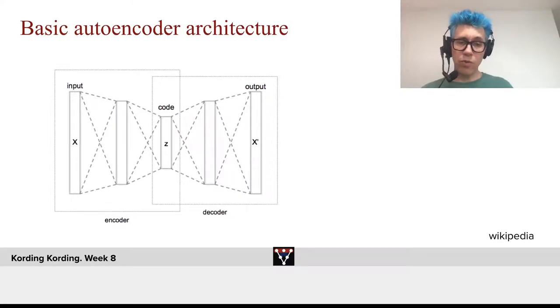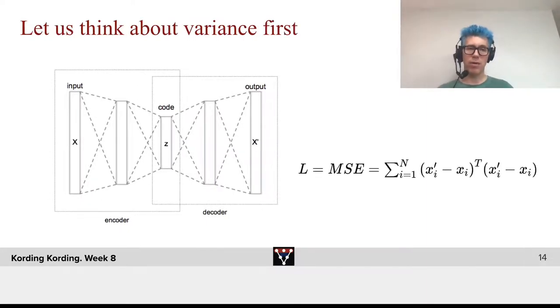Of course, we would want to train it so that it produces a good code. As we discussed before, there's lots of definitions of good code, but a very easy one is the mean squared error.